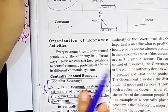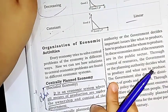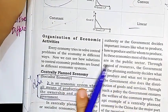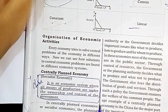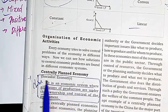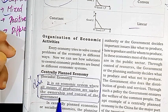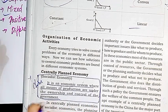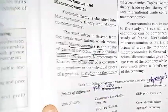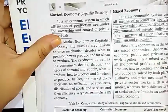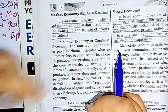The Centrally Planned Economy is an economic system where the means of production are owned by the government. The Centrally Planned Economy is also called the Socialist Economy. In contrast, the Capitalist Economy is not government-owned — it is privately owned.